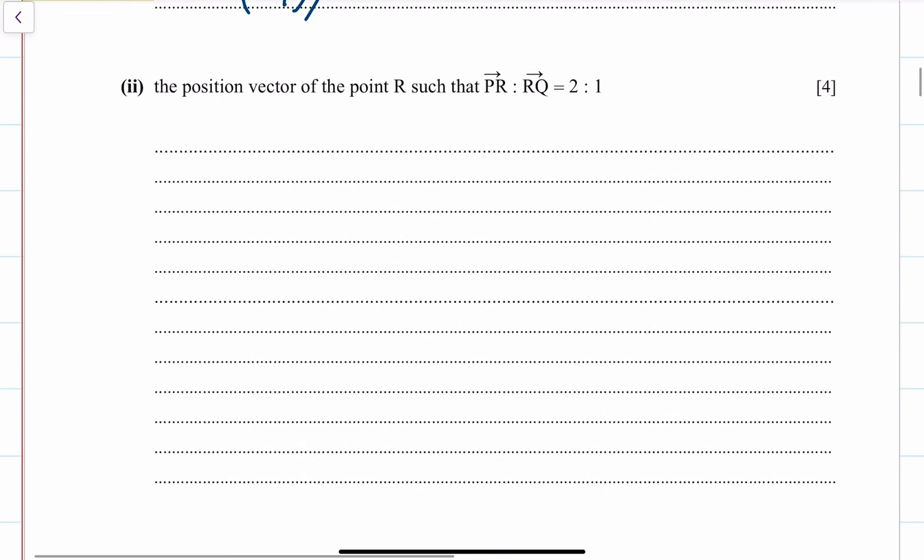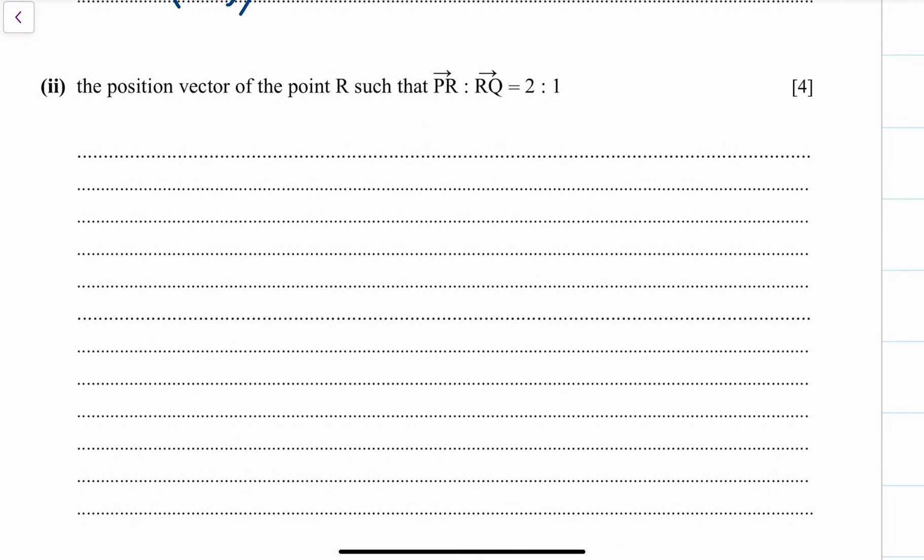The next bit says the position vector of the point R such that PR to RQ is 2 to 1. Let's do a little diagram here. This is just a sketch.